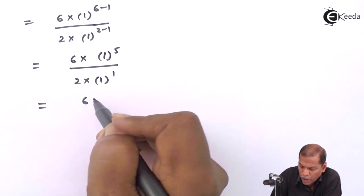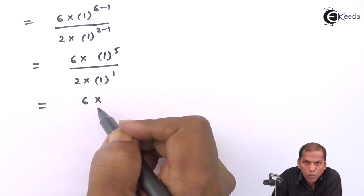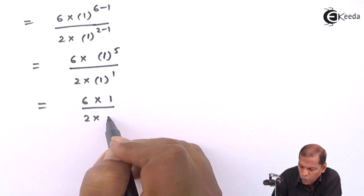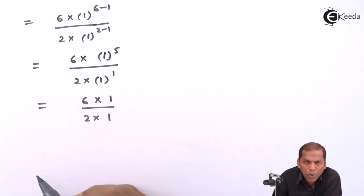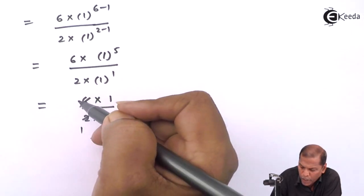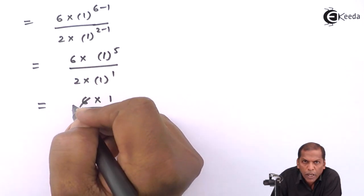That equals 6 times 1 over 2 times 1. On cancellation, we get the answer: 6/2 equals 3.